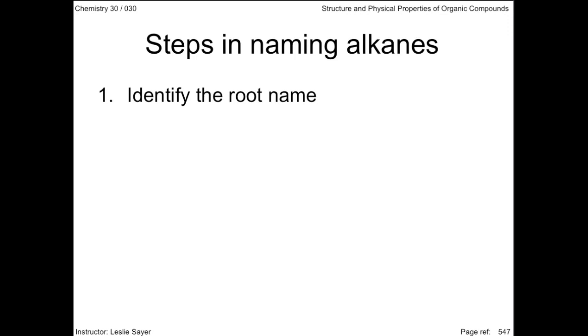Number the carbons of this main chain. Carbon number one is the carbon at the end of the alkane that will give the branches the lowest possible numbers.